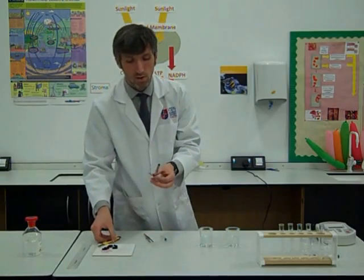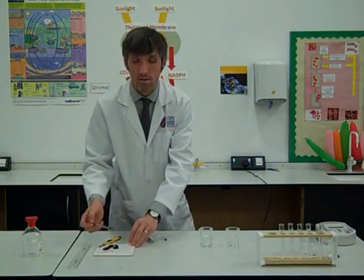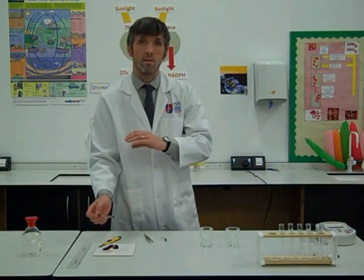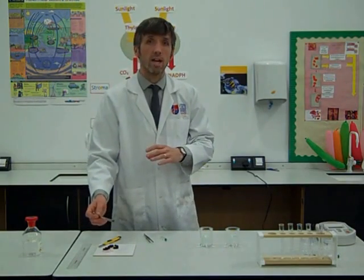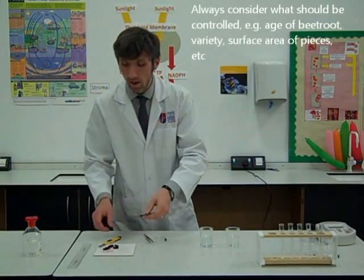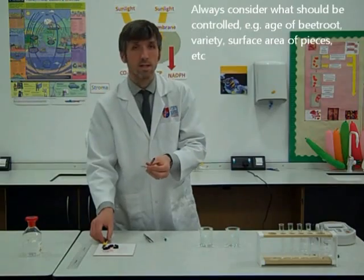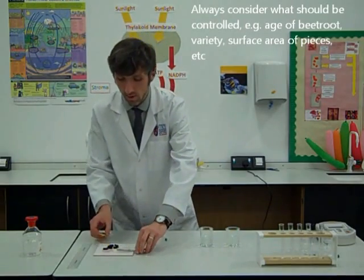We've got to prepare the beetroot. We've cut the beetroot out of the same beetroot, so that controls the variety of beetroot, and the age of the beetroot and how it's been stored, using a core borer. So we've cut it into cylinders.